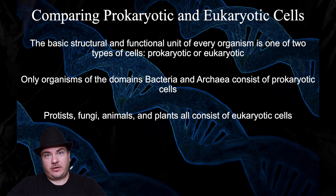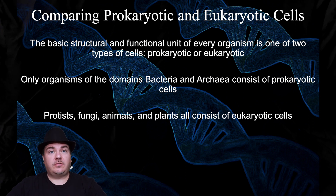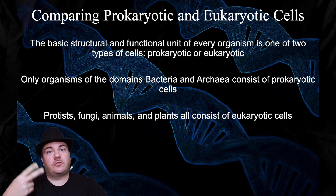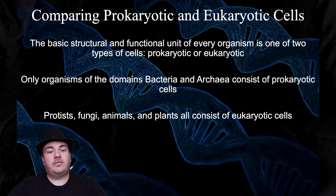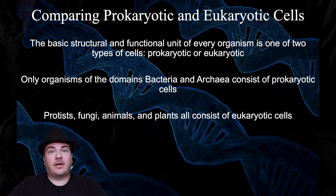Now that we know a little bit about one of the ways we might study cells, which is by using a microscope, let's actually talk about cells. When it comes to cells, there are two broad categories: prokaryotic cells and eukaryotic cells.